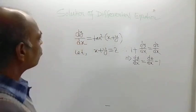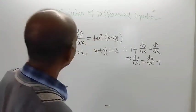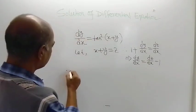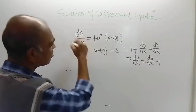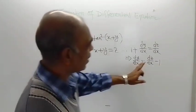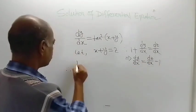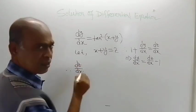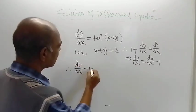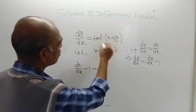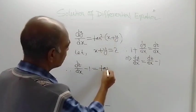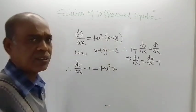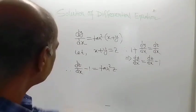So now from the given problem, we replace dy/dx by dz/dx minus 1. So dz/dx minus 1 is equal to the right-hand side, which is tan square z, because x plus y equals z.